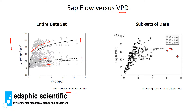What this shows is that as vapor pressure deficit increases, sap flow also increases, but then reaches a point where VPD keeps increasing while sap flow doesn't increase as much — meaning the stomata start to close. It basically demonstrates that stomata close at high VPD.